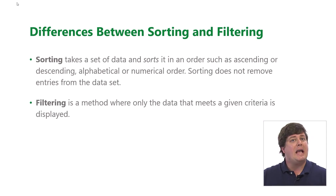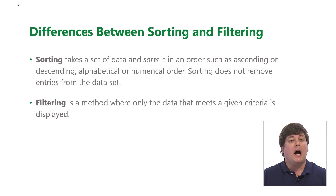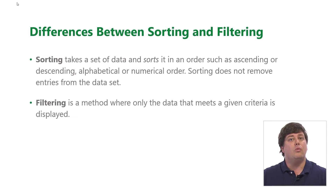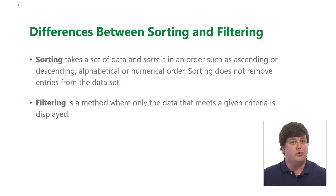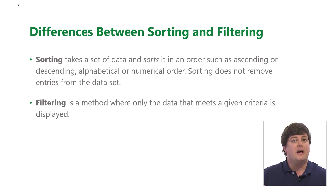Filtering is hiding certain items that don't meet a specific criteria. So if I only wanted to see sales that occurred in building one, I could filter to just building one, as long as I had a location column with that information. If I only wanted to see sales that occurred during June, I could filter specifically to June. Filtering requires a column with information that you can set a criteria on.